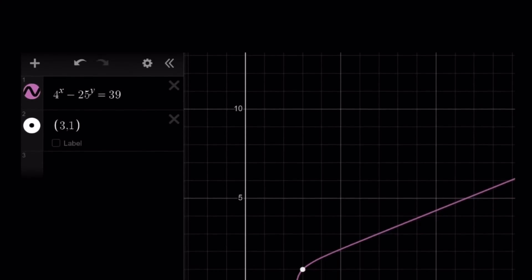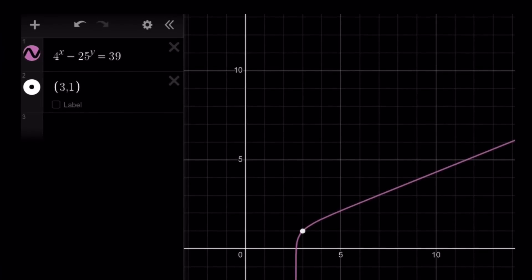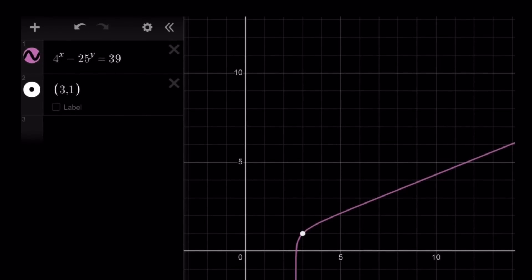Here's the graph of the relation, 4 to the x minus 25 to the y equals 39. And why did I mark the only single point, 3 comma 1? Because that's the only point with integer coordinates. And those are called lattice points. Lattice points are points with integer coordinates. And we have a single solution for this equation.